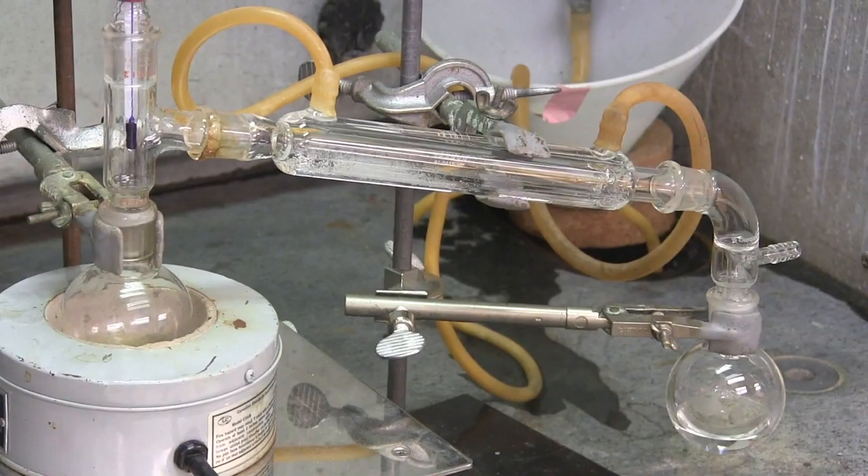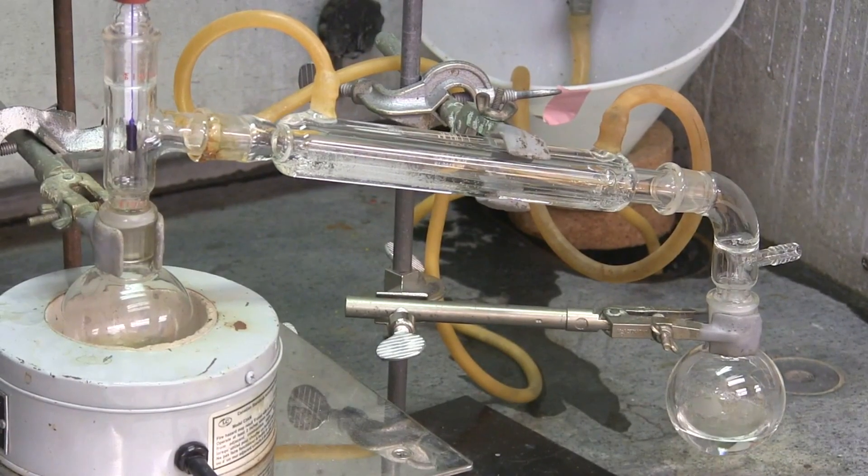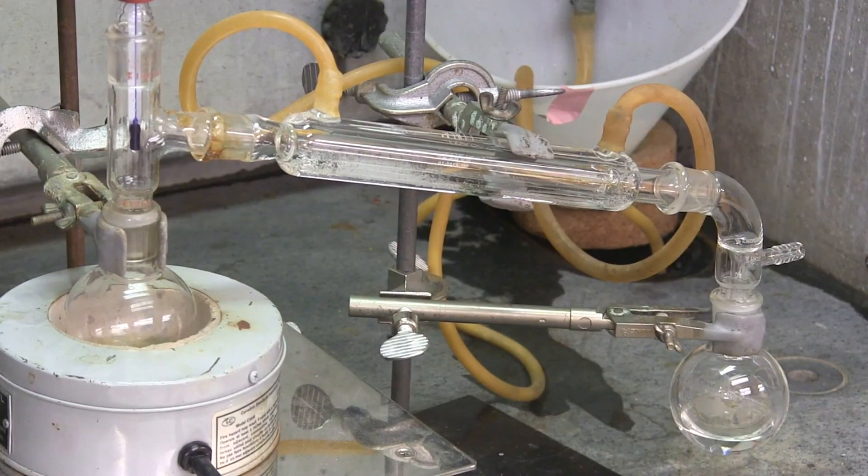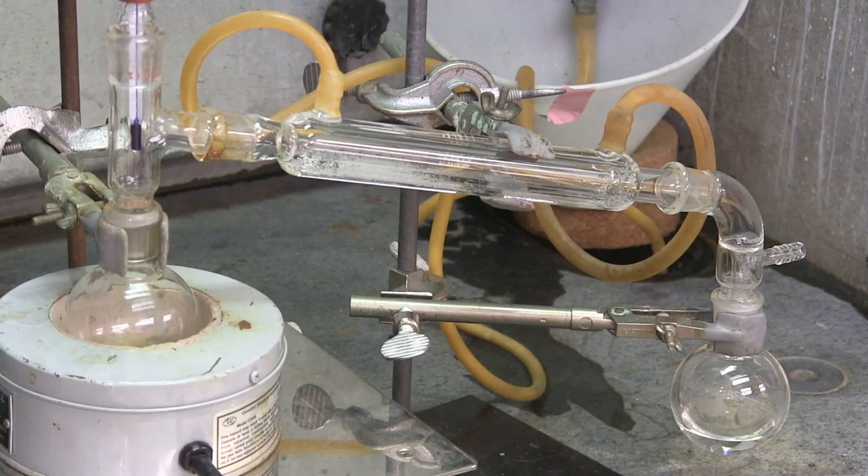Here we can see a simple distillation in progress. Note that the thermometer bulb is placed just under the adapter joint, such that the reading is an accurate temperature of the hot vapor inside of the apparatus.